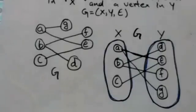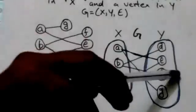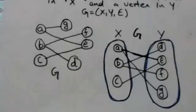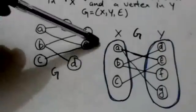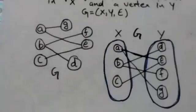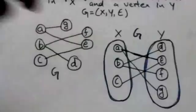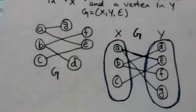Now every edge of graph G is between a vertex in X and a vertex in Y. There is no edge which joins a vertex in X to another vertex in X. Similarly, there is no edge which joins a vertex in Y to another vertex in Y. Therefore, graph G is a bipartite graph.